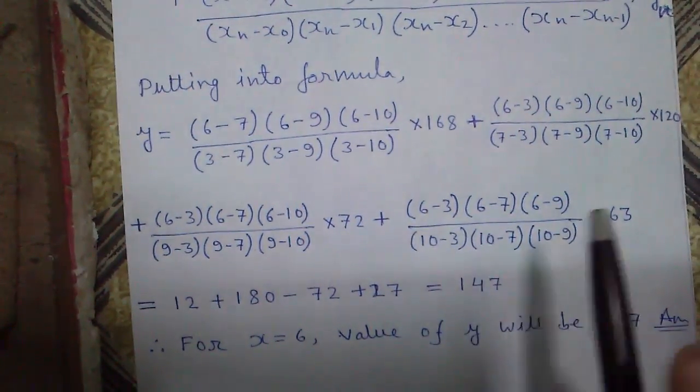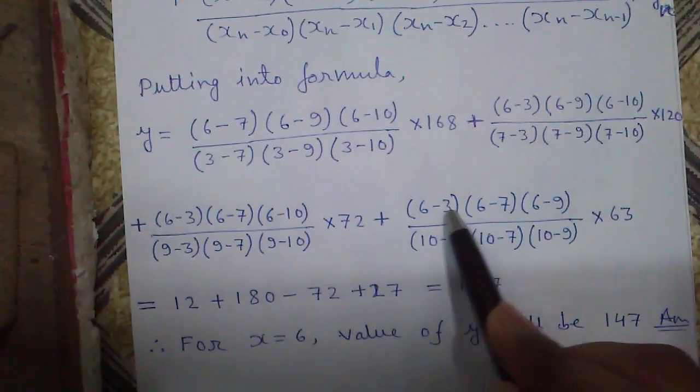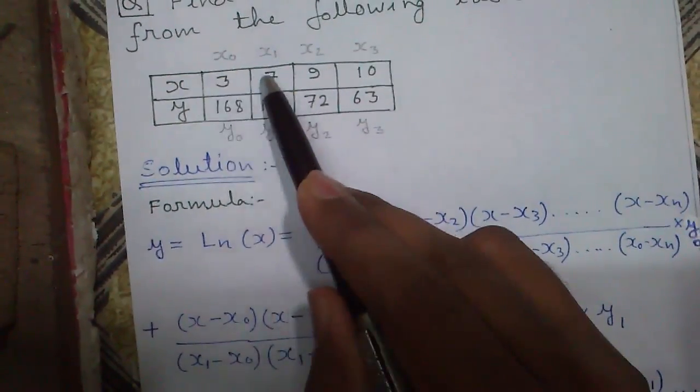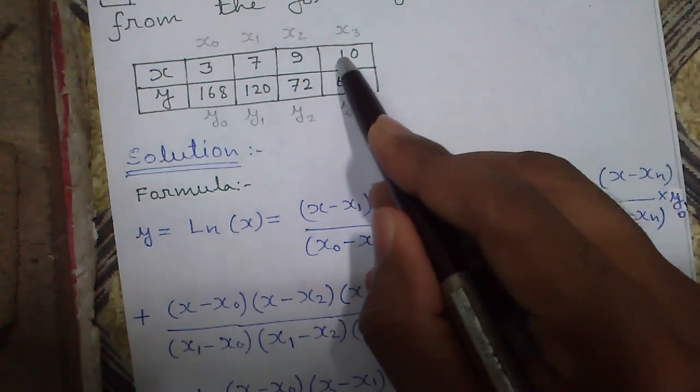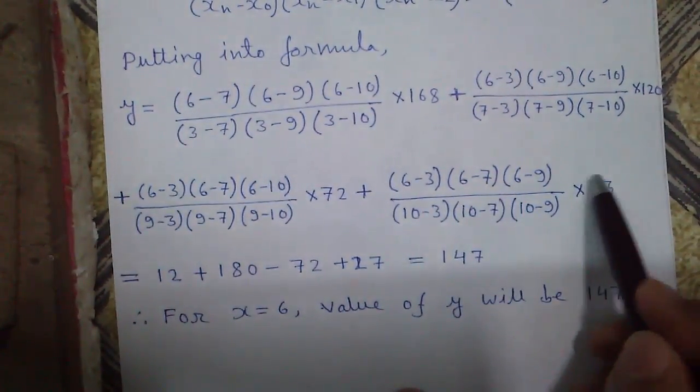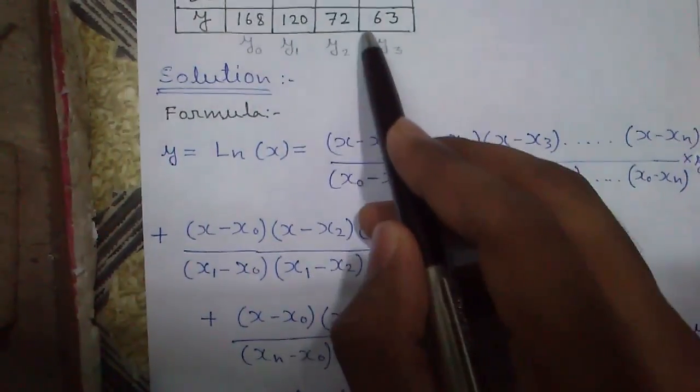For our final term, here x3 will be missing, so x minus x0, x minus x1, and x minus x2. x3 will be missing. In the denominator we will subtract everything from x3 that is 10, so 10 minus 3, 10 minus 7, and 10 minus 9 times y3. y3 is 63.